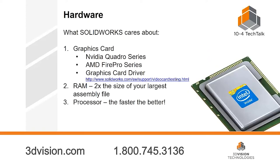Starting with computer hardware — a lot of people ask what's important in hardware that SOLIDWORKS really cares about. The first thing is your graphics card. SOLIDWORKS has a website that lists approved graphics cards. As long as you have an NVIDIA Quadro series or an AMD FirePro series, you're usually okay. Those are workstation-end cards you can buy from Dell or HP that are geared for CAD and other workstation applications, not for gaming or personal computers. That's the most important part of your hardware.